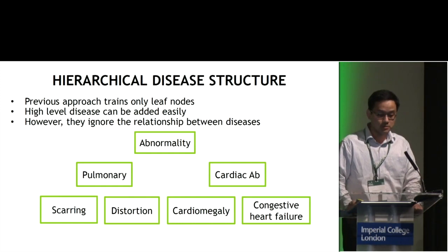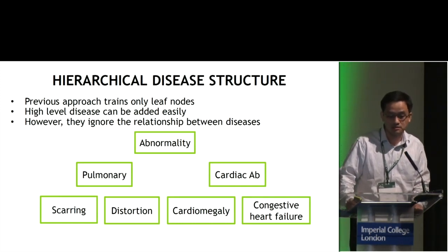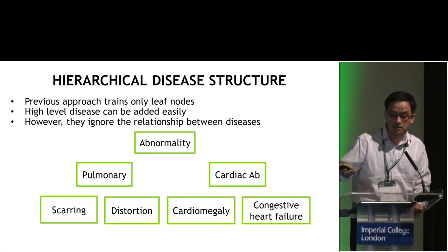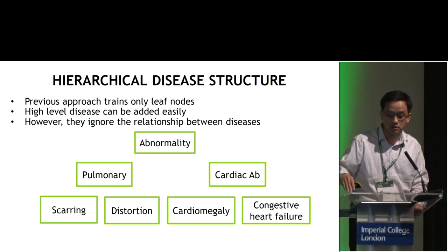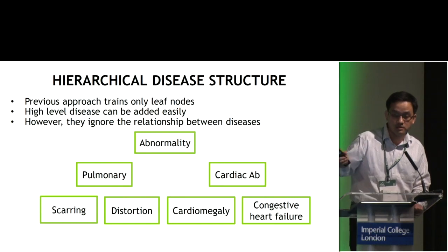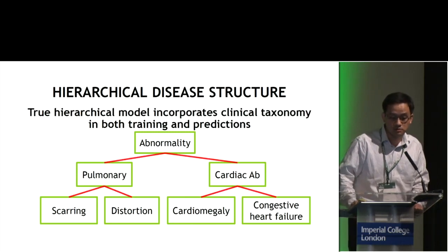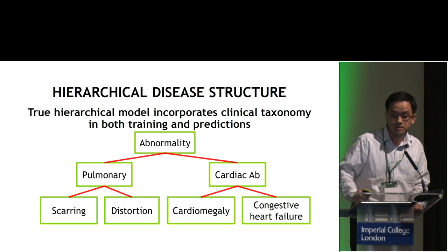A previous approach for chest X-ray classification only focuses on the leaf nodes, like scarring, distortion, and cardiomegaly. They could easily add some high-level labels by adding more leaf nodes, but in this way they still ignore the relationships between diseases. For us, we want to use a true hierarchical model that incorporates the clinical taxonomy in both training and prediction.